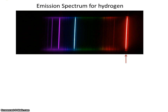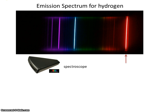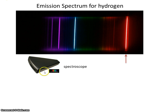Now let's say we wanted to know the wavelength of that particular color of red light. We can use something called a spectroscope to help us do that. The spectroscope allows light to come in through here, and the viewer looks through this end and sees the light projected on a little screen located inside the box, enabling the viewer to determine what the wavelength was. Using a spectroscope, we could determine that this particular color of light has a wavelength of 656 nanometers.